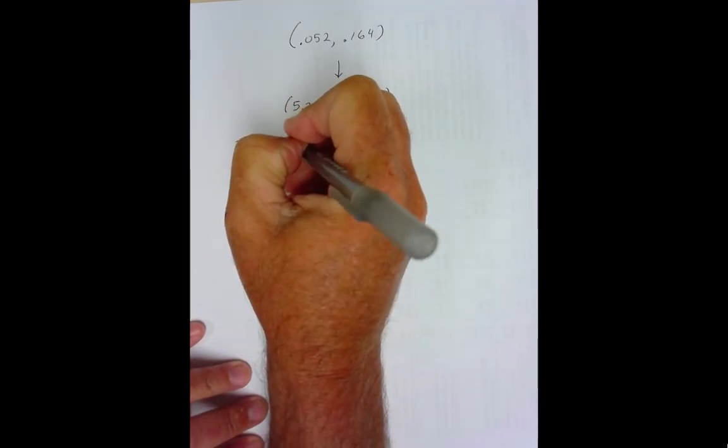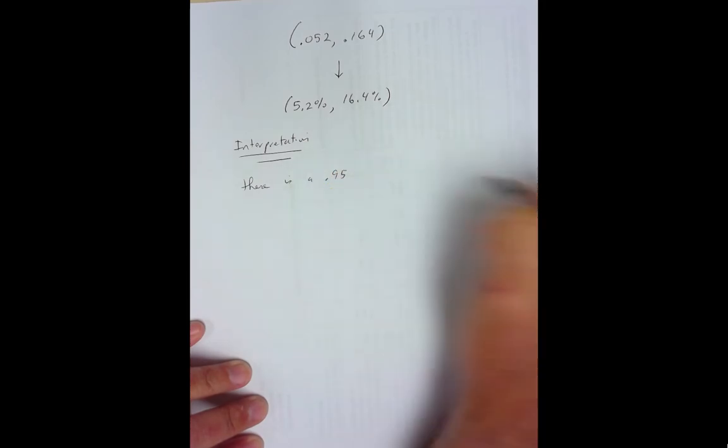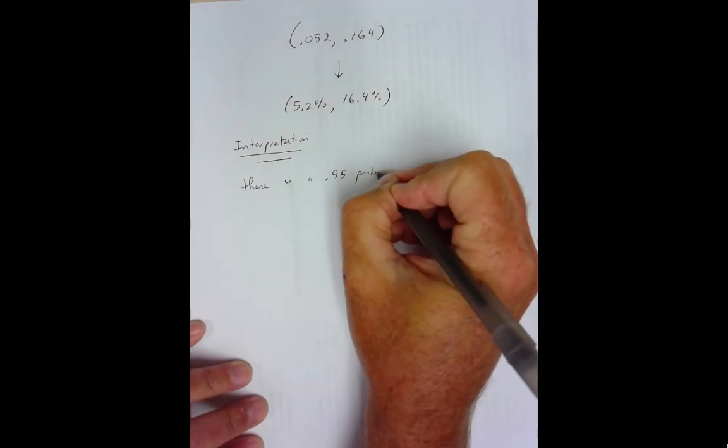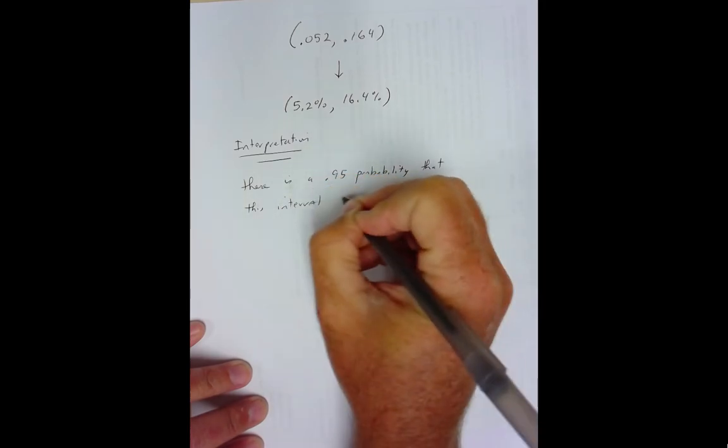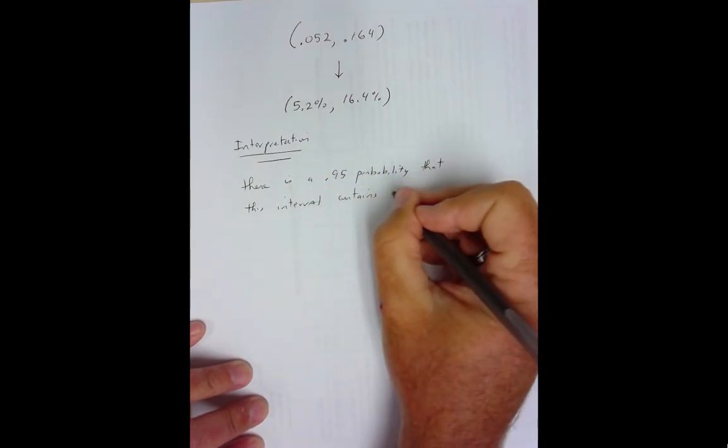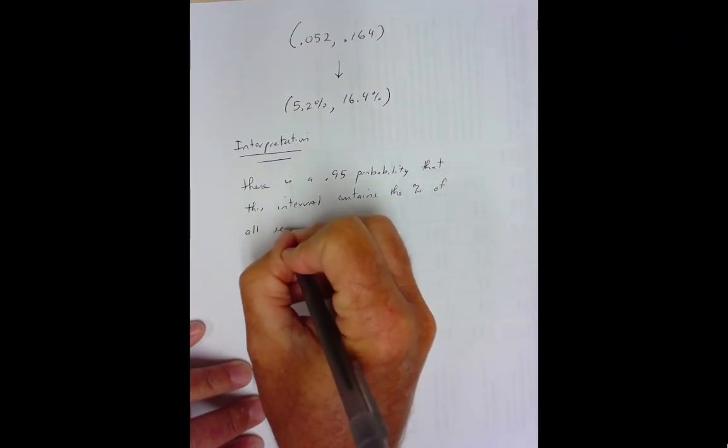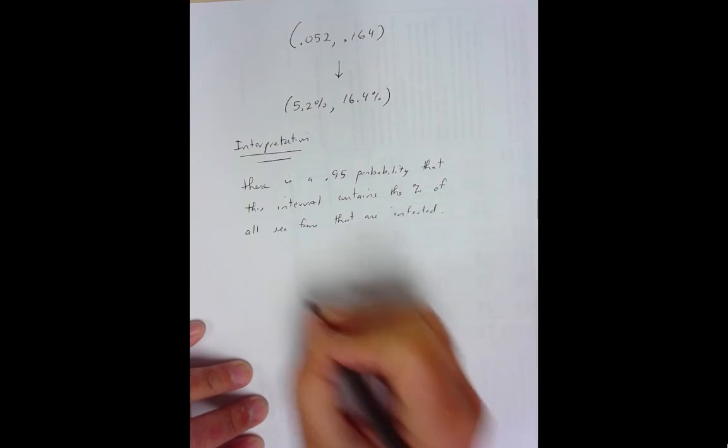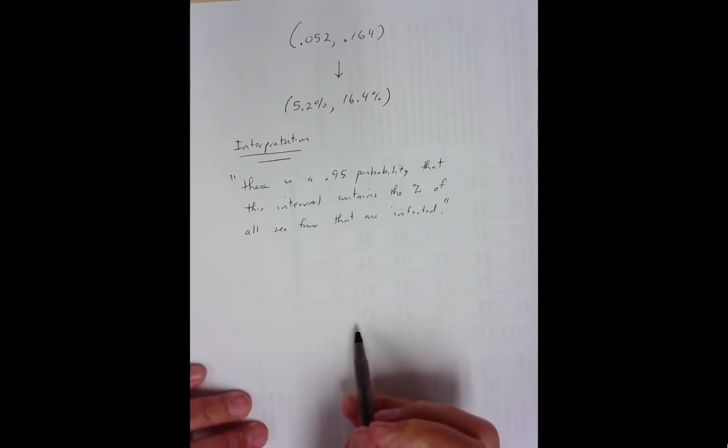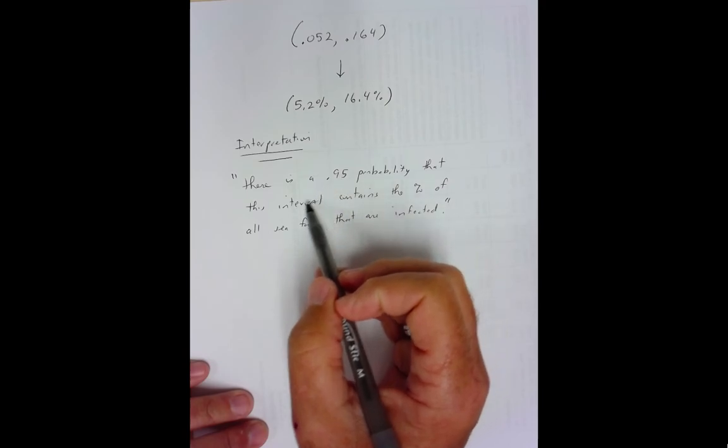Interpretation. There is a 0.95 because we did a 95% confidence interval probability that this interval contains the percentage of all sea fans that are infected. Now, notice I didn't say there's a 0.95 probability that the percentage of all sea fans that are infected is in this interval. That's technically not correct.